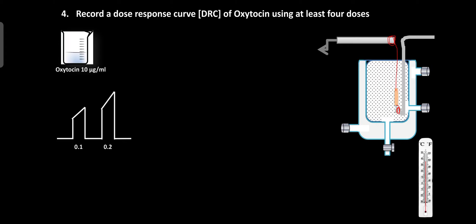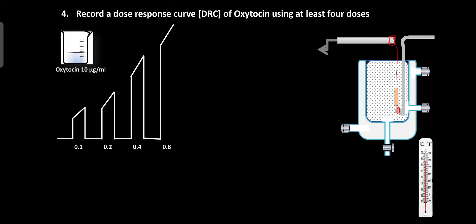Then add 0.4 ml of oxytocin solution and record the response for 30 seconds. After 30 seconds, stop the drum and change the Ringer's solution at least two to three times. After the washing period, record the baseline for 30 seconds. Then add 0.8 ml of oxytocin solution and record the response for 30 seconds. After 30 seconds, stop the rotating drum and change the Ringer's solution two to three times. This completes the DRC of the standard oxytocin solution, using a concentration of 10 microgram per ml.